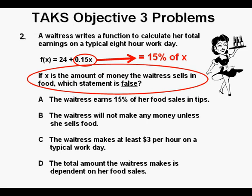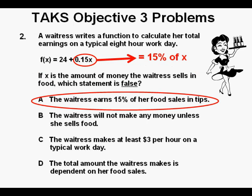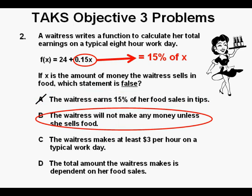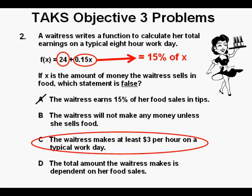In evaluating this statement in answer A, does the waitress earn 15% of her food sales in tips? Yes, she does earn 15% of the food sales in tips. Since that's true, we cross off A. Now for answer B. Is it true that the waitress will not make any money unless she sells food? It looks like she will still get $24 even if her sales amount, or x, is zero. This statement looks to be FALSE. Let's look at answer C. Is $24 at least $3 per hour on an 8-hour workday? Since it is, it's true. We cross off answer C.